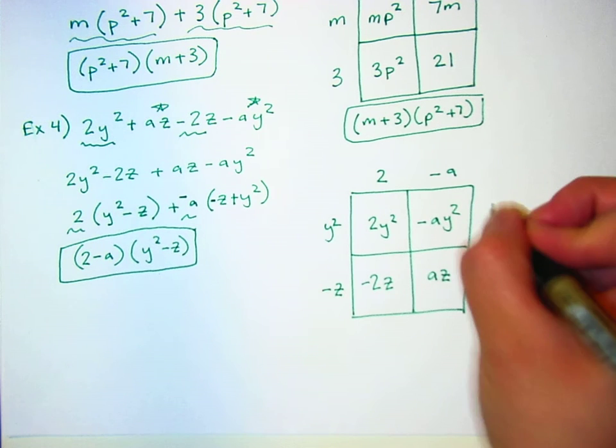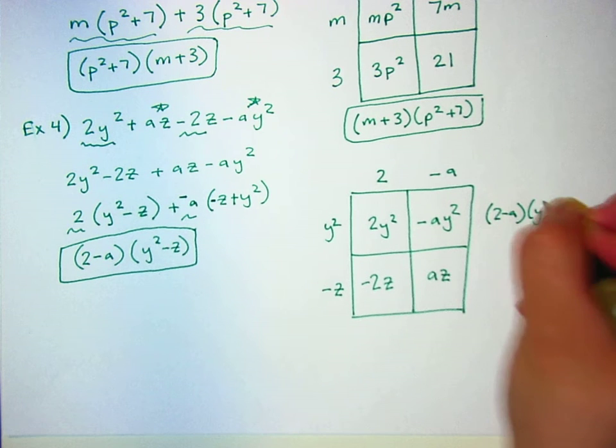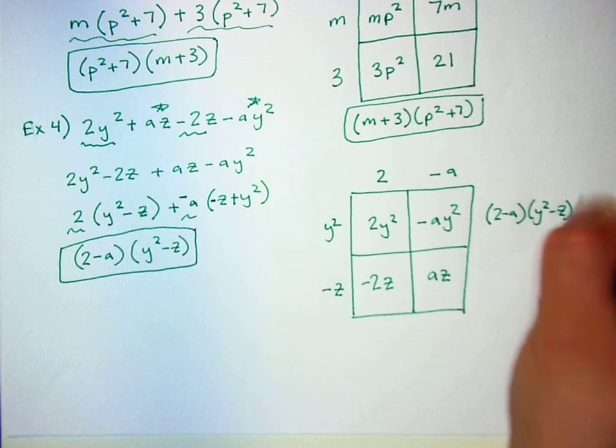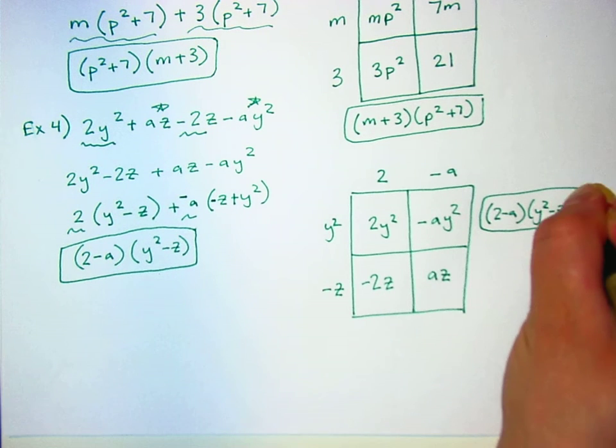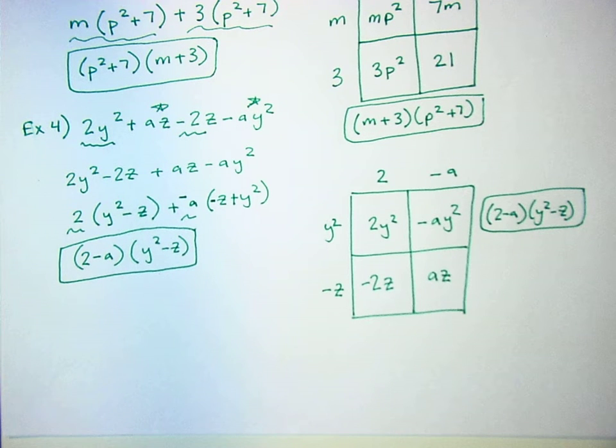So my answer here is 2 minus a times y squared minus z, which is exactly what I got on the first one. Okay. Those are all of the examples.